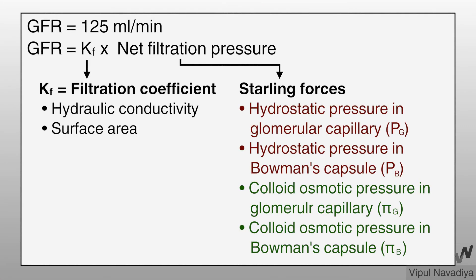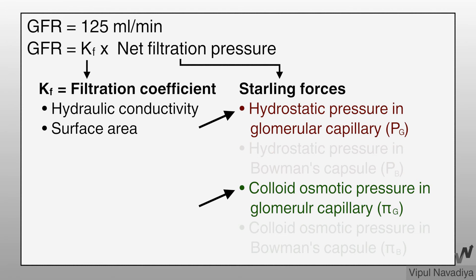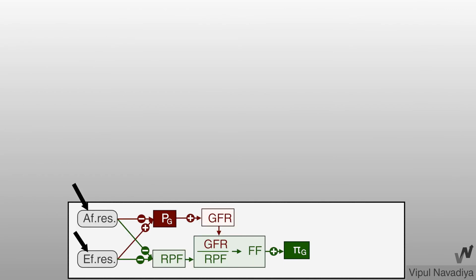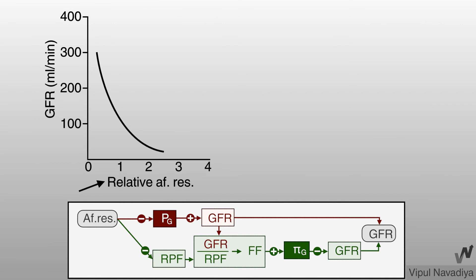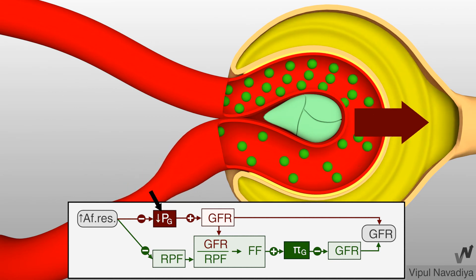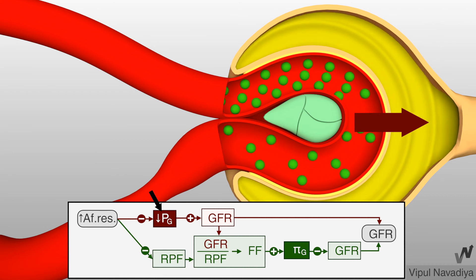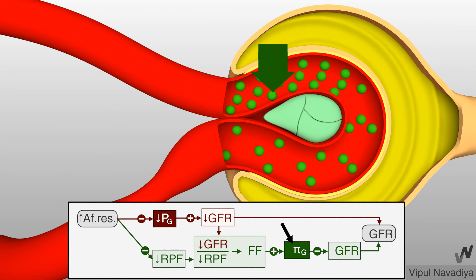Among these factors, glomerular capillary pressures are the most important for regulation of GFR, and both are ultimately controlled by afferent and efferent arteriolar resistance. This graph shows the effect of afferent arteriolar resistance on GFR. Rising afferent arteriolar resistance causes a fall in GFR because it causes a fall in glomerular hydrostatic pressure, which tends to decrease GFR, while it does not affect colloid osmotic pressure much. So GFR falls as a result of the fall in hydrostatic pressure.